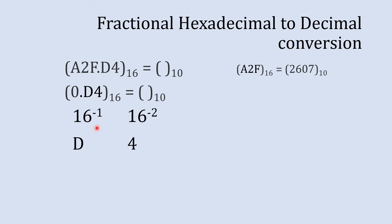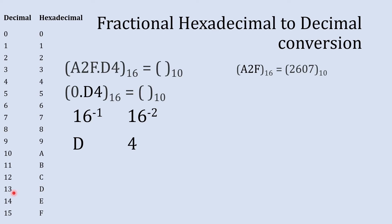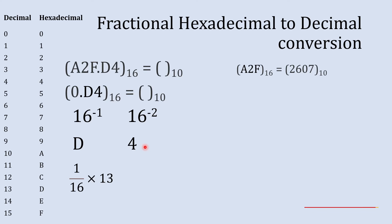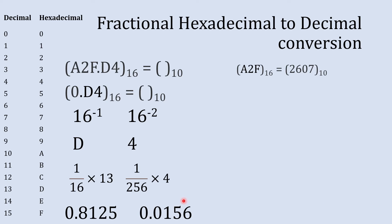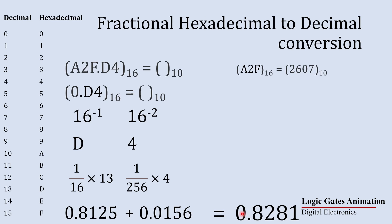We multiply 16 raised to minus 1 by D, but since we can't multiply directly by D, we use its decimal equivalent, which is 13. So 16 raised to minus 1 is 1 over 16, times 13, which equals 0.8125. Next, 16 raised to minus 2 times 4 is 1 over 256 times 4, which equals 0.0156. Adding these together gives 0.8281, which is the decimal equivalent of the fractional part.